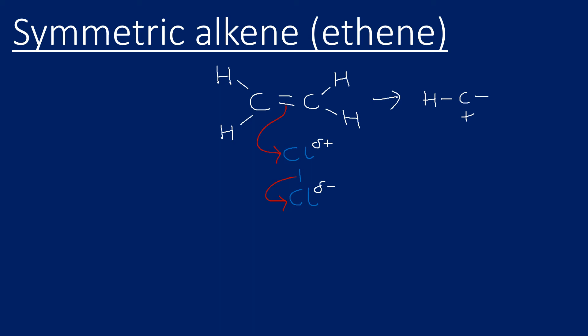Let me draw a carbocation. So the chlorine I've shown bonded to the one on the right, I could have shown it the one on the left. It would have made no difference whatsoever because this is a symmetric alkene, so they both would have been absolutely identical.